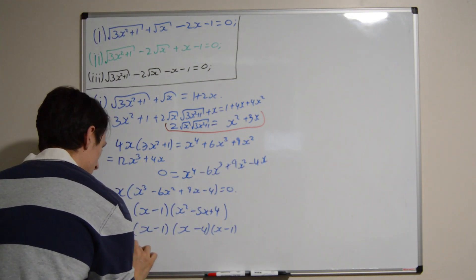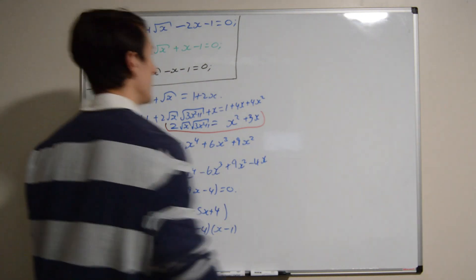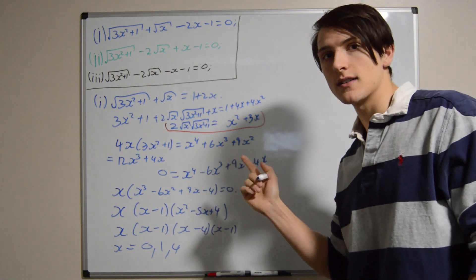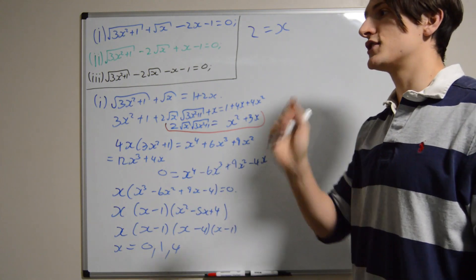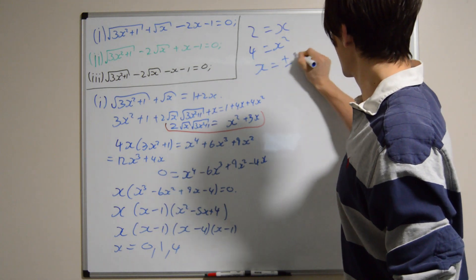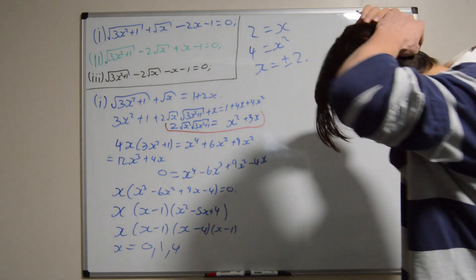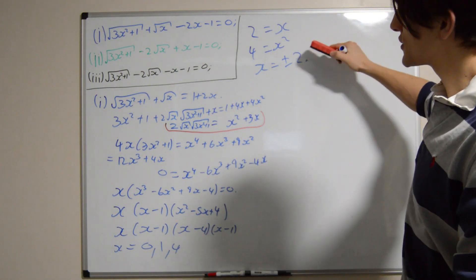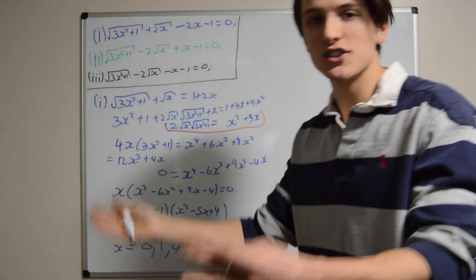So our solutions are x equals 0, 1, and 4, with 1 being a repeated root. Well, we're done, right? No, we're not done — of course we're not done. We've squared, and what happens when we square? Take a simple example: 2 equals x has solution 2, but squaring both sides gives plus or minus 2. It introduces extraneous solutions, so it's just a case of plugging the numbers back in and checking.